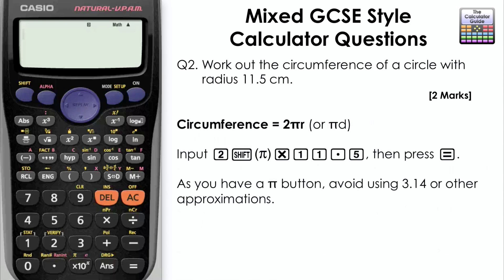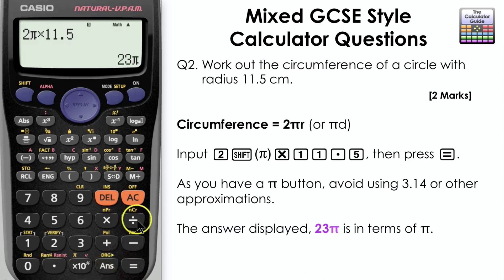Circumference is 2πr, so we're going to input 2 and then press shift and pi, and multiply this by our radius of 11.5. Then press equals. As you have a pi button available, I would avoid using 3.14 or any other approximation for pi.